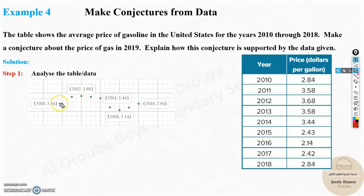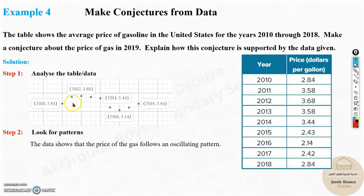What it shows is there's a pattern where it goes up, goes down. Again, it will go up, go down. It's like a sine graph, like oscillating. This is the data that is given. What is the pattern?